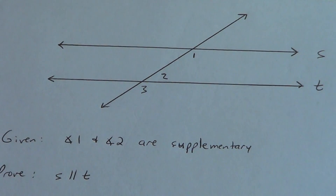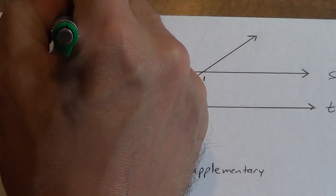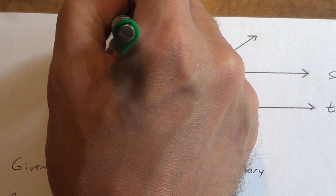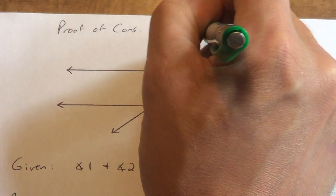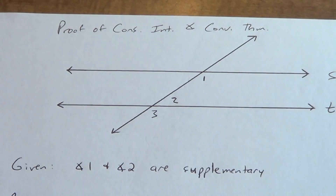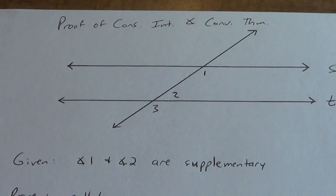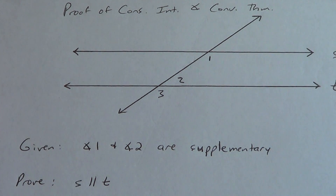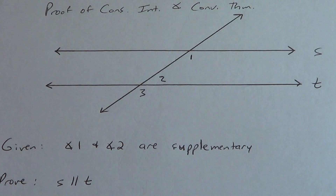Copy this picture down. This is the proof of the Consecutive Interior Angle Converse Theorem. Our given is that angle 1 is supplementary with angle 2, and we're going to try to prove that lines S and T are parallel. Copy that down — pause it if you need to get it copied because I'm going to move on pretty quick.